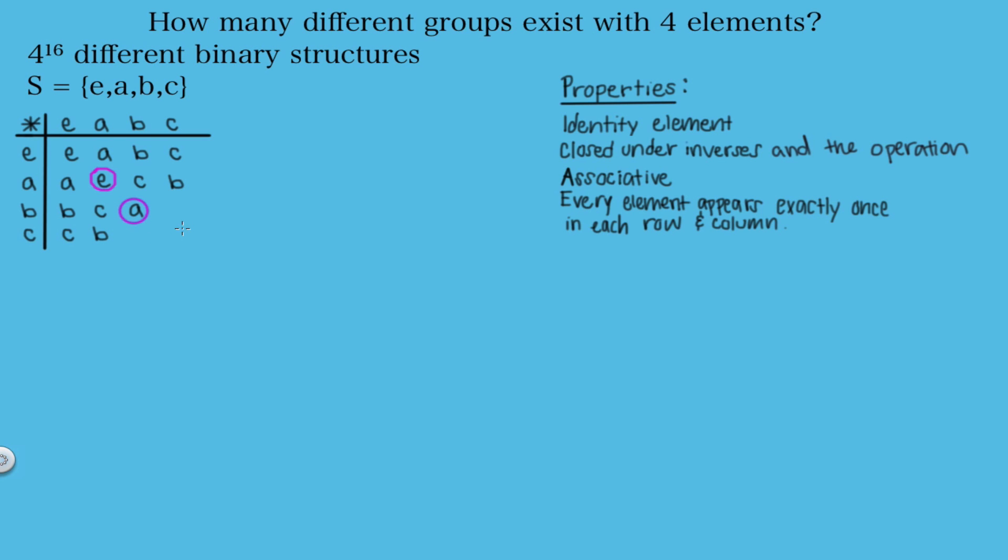And then this final row and column both need an A. So this will be one binary operation table we get that can form a group with a set S.